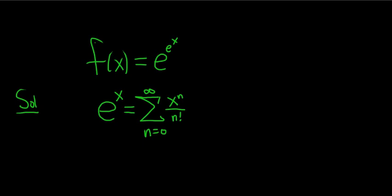So we want to find the Maclaurin series for e to the e to the x. So all we do is replace x with e to the x. So we have e to the e to the x.